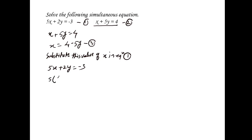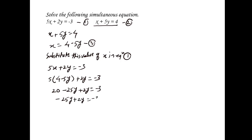Now substituting x equals 4 minus 5y into the other equation: 5 times (4 minus 5y) plus 2y is equal to minus 3. Multiplying: 5 times 4 is 20, minus 5 times 5y is 25y, so we get 20 minus 25y plus 2y is equal to minus 3.